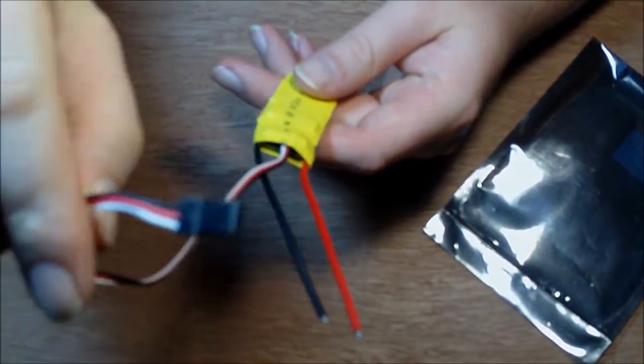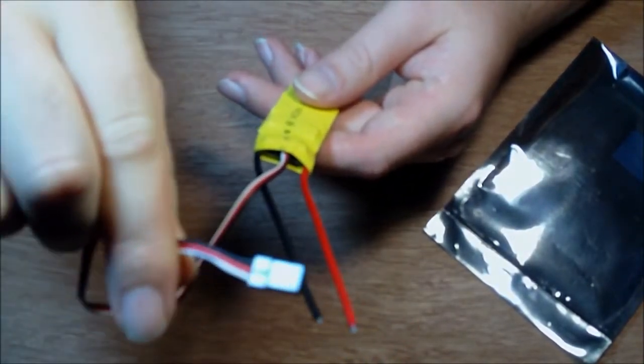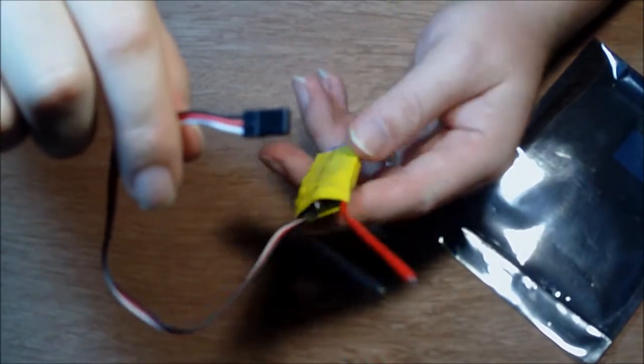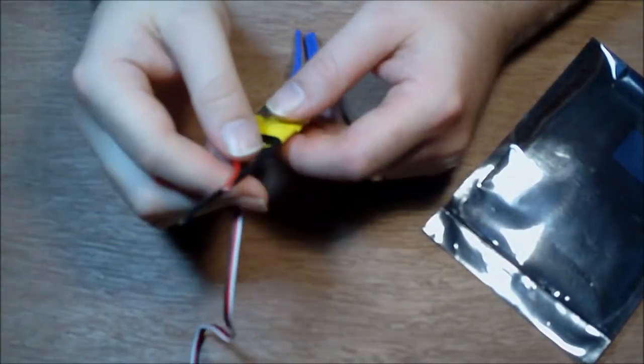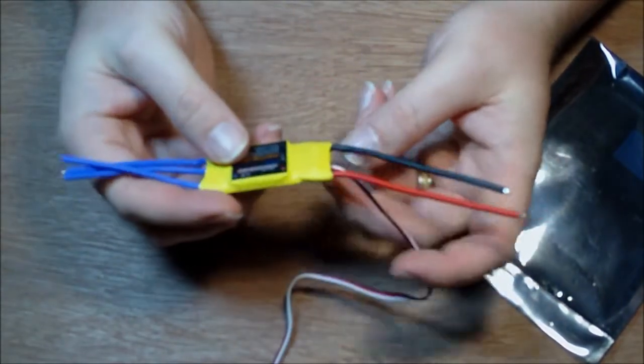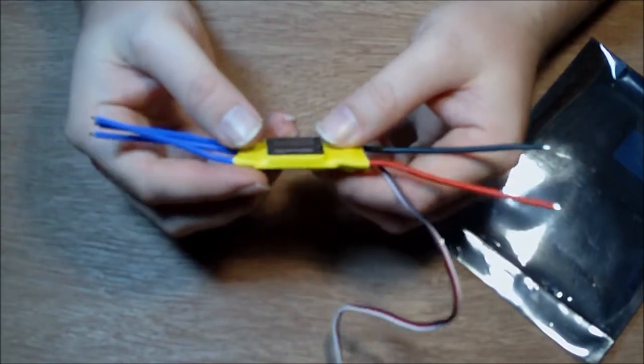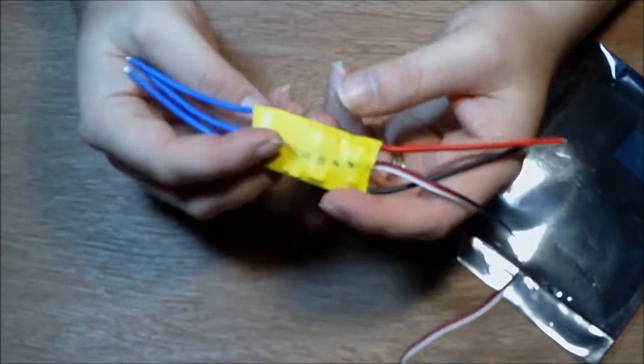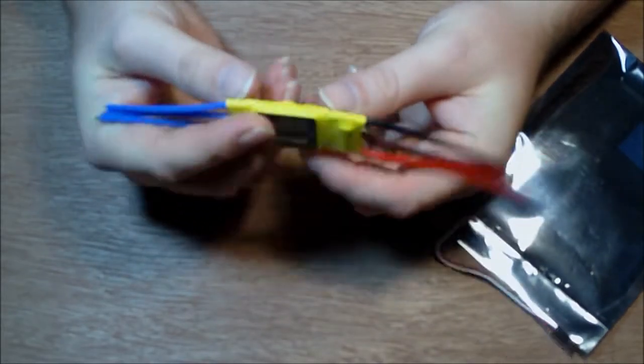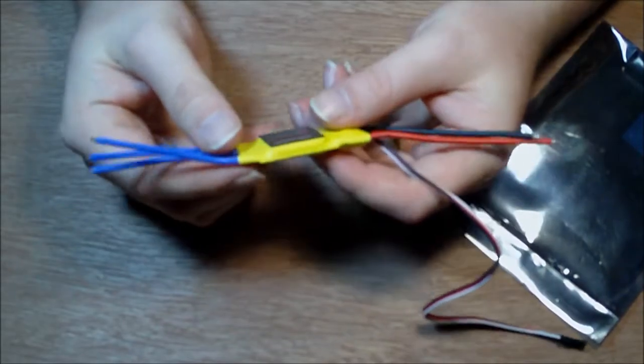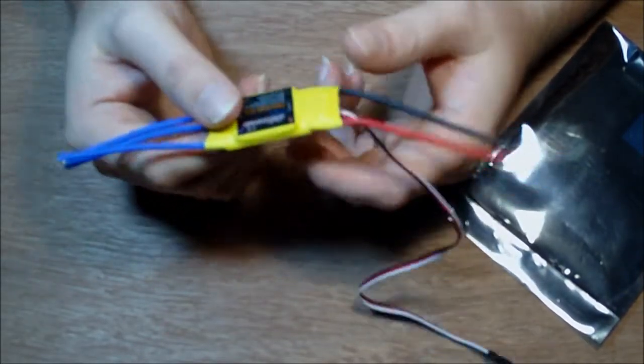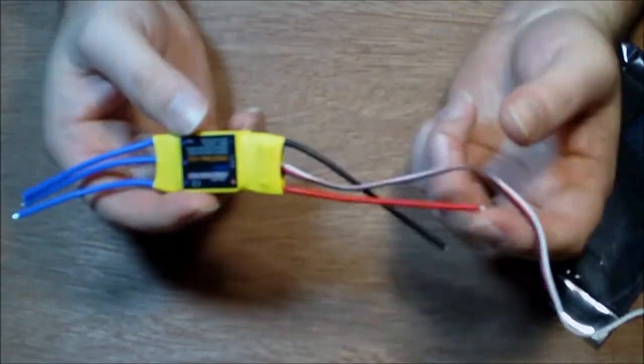Nice little lead here for your receiver. Let's see, this one has a continuous current of 18 amps and a burst rate of 22 amps. I plan on putting it on an Alpha 370 that is a 1360 kV motor that I also got in the same order.